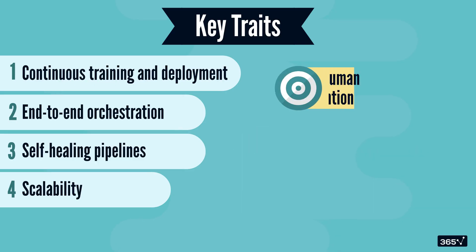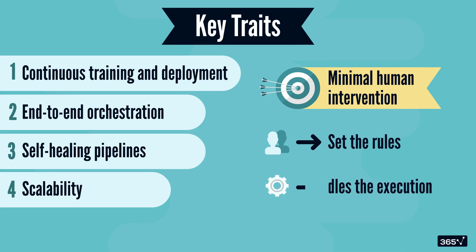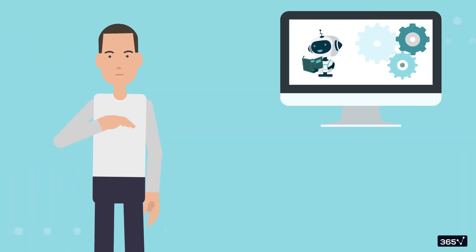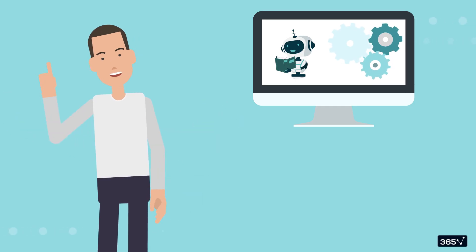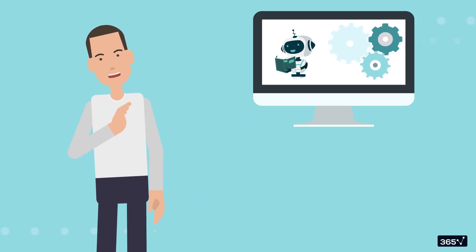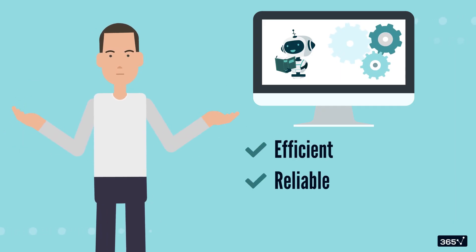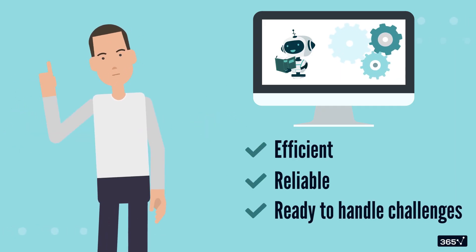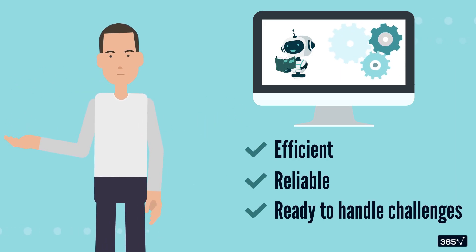And finally, minimal human intervention is the goal. Engineers set the rules, but automation handles the execution. Instead of constantly managing the pipeline, you get to focus on innovation and improvement. This is what a fully automated ML Ops system should look like: efficient, reliable, and ready to handle the challenges of real-world ML.